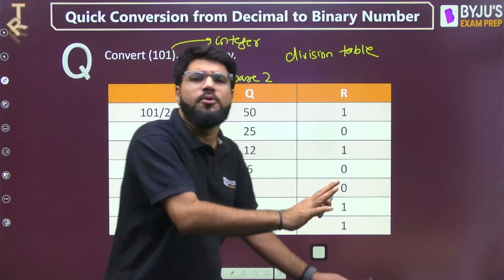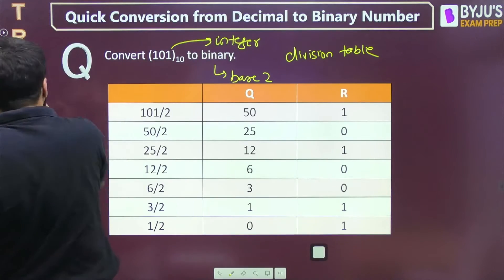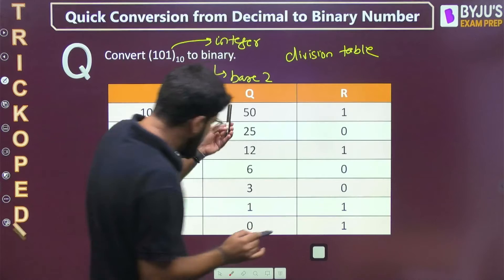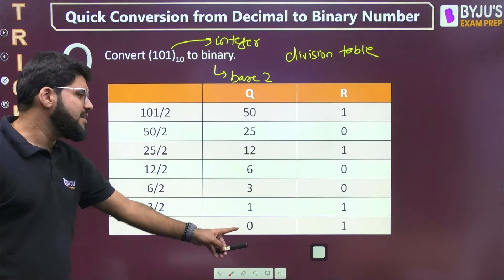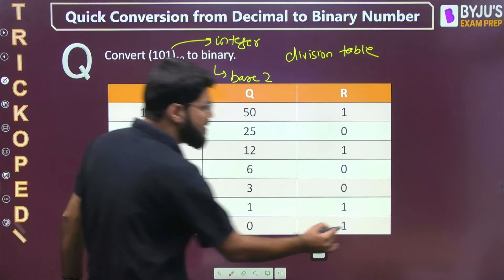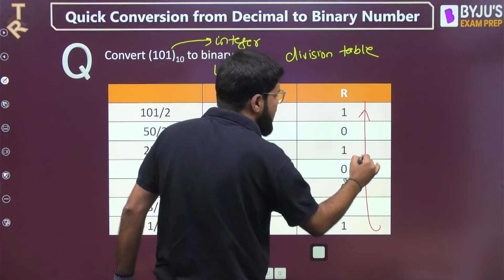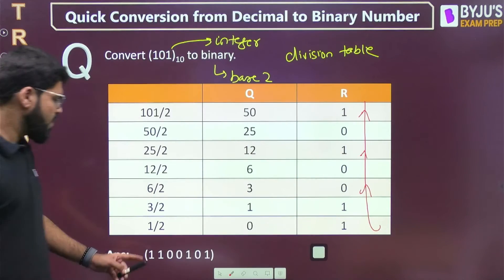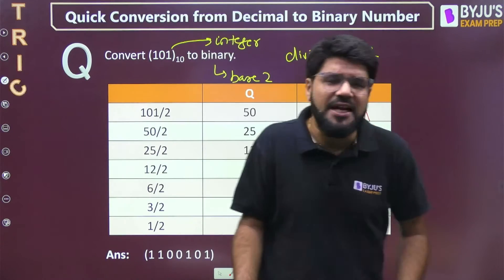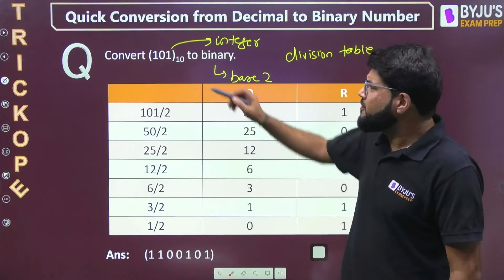You keep dividing till you get the quotient equal to zero. Then the answer is obtained by reading the remainders in the reverse order. So my answer is 1100101.